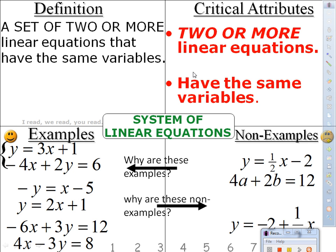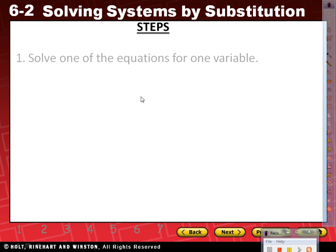For this lesson we have five steps, but each step has a lot of processes, so make sure you write these down. Step one: solve one of the equations for one variable. The systems we've been working with have two equations, and each equation has two different variables, so step one is to solve one of the equations for one variable.